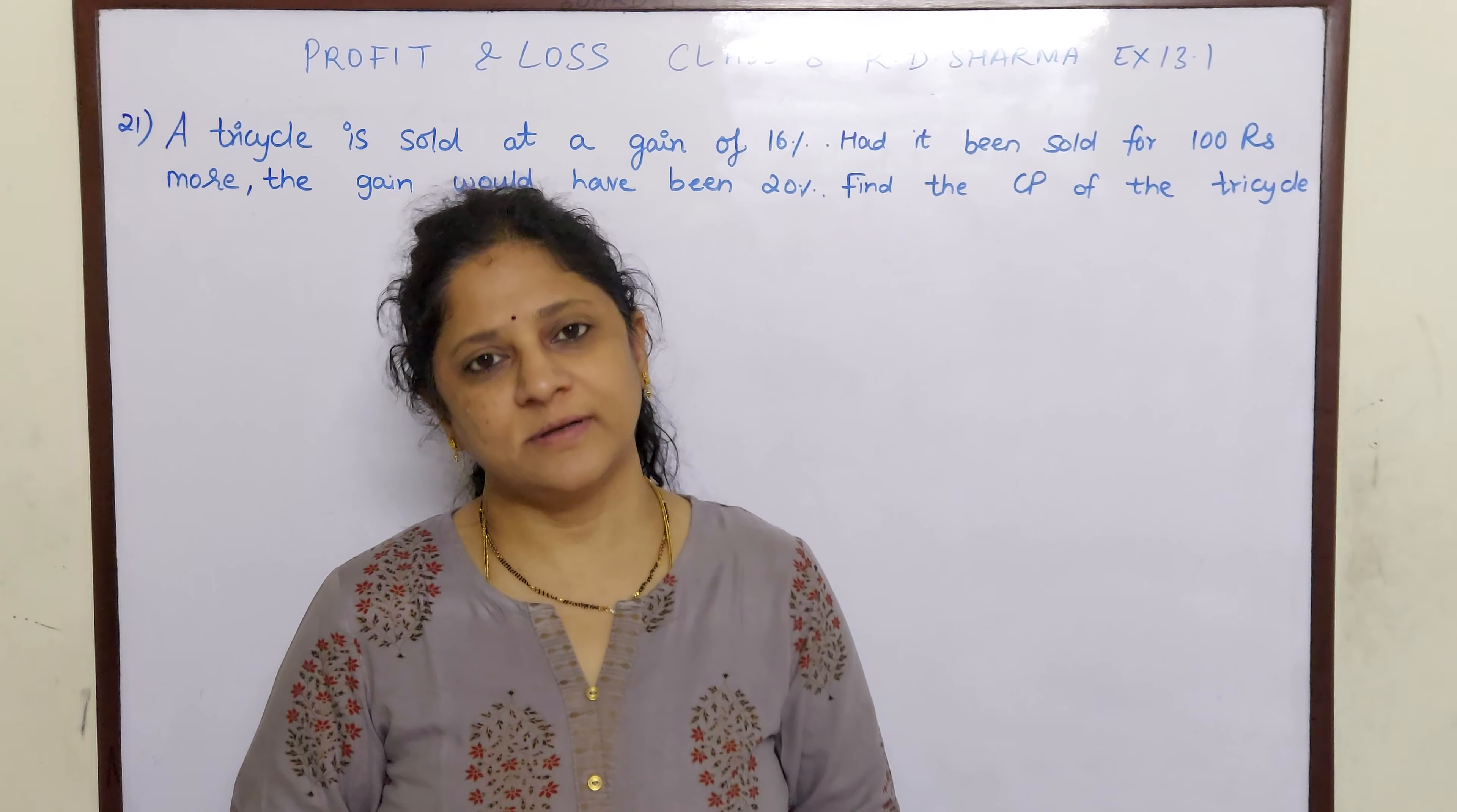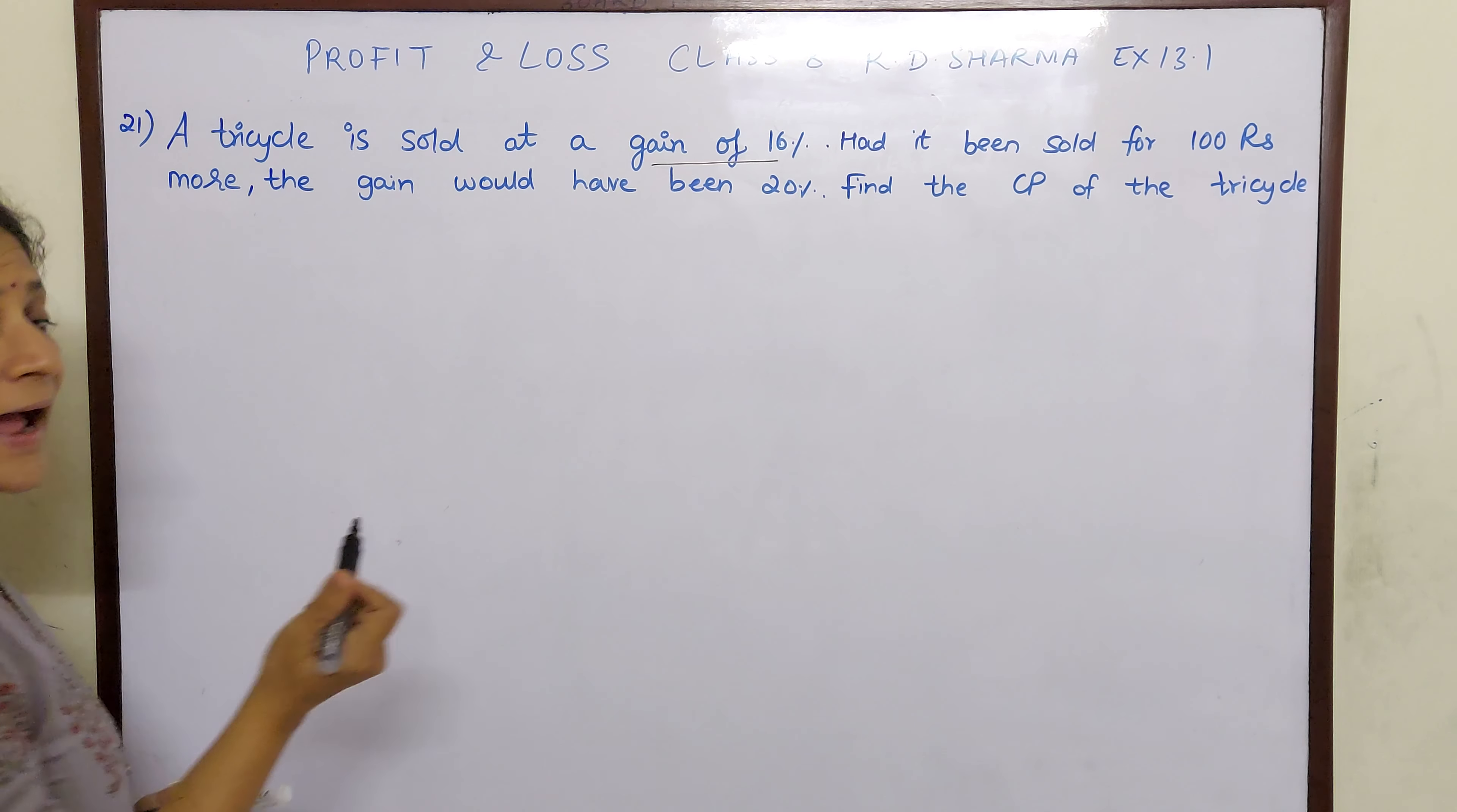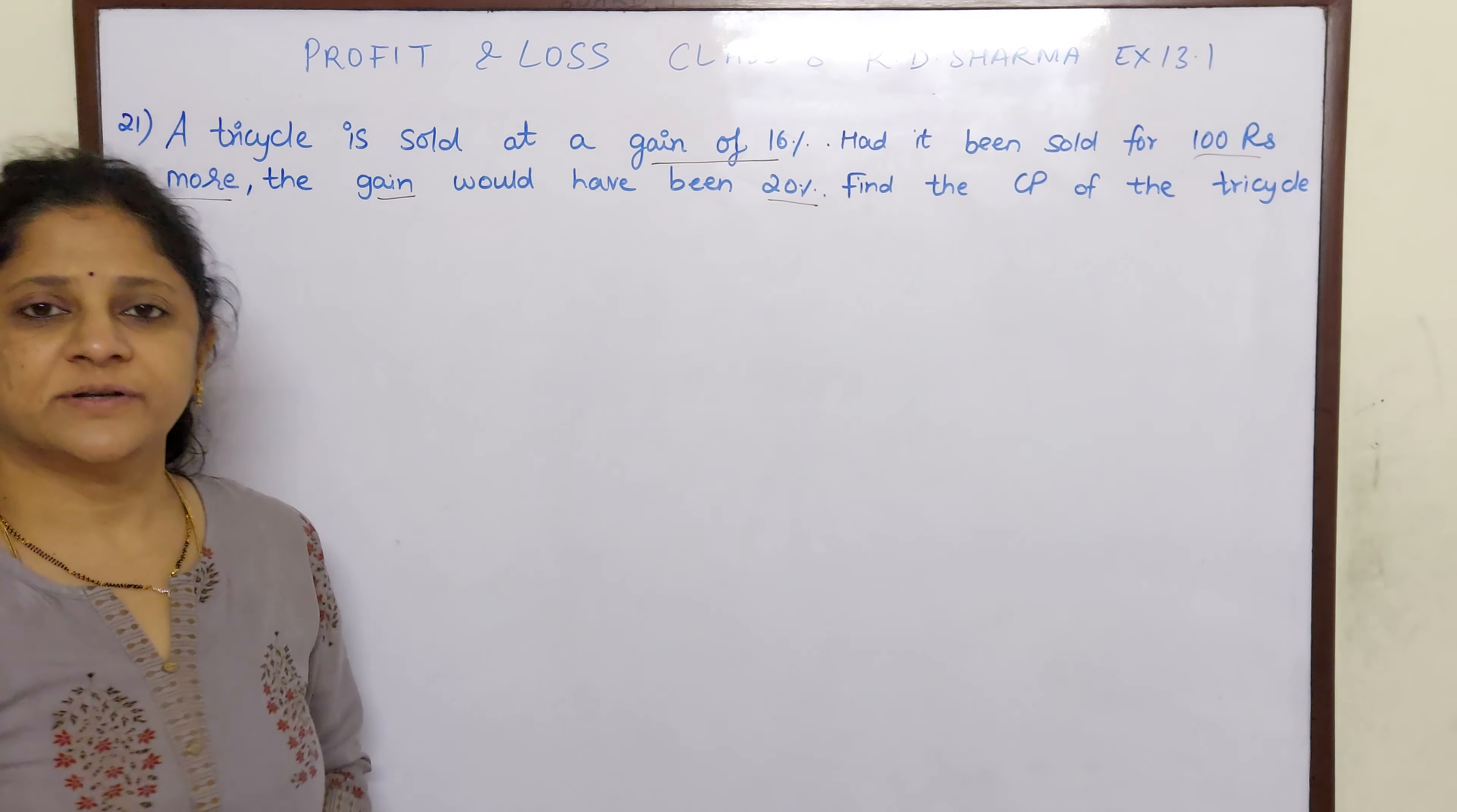Hello children, so let us move on to the next word problem on profit and loss. A tricycle is sold at a gain of 16%. Had it been sold for 100 rupees more, the gain would have been 20%. Find the cost price of the tricycle.